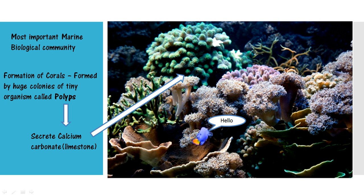Coral reefs are one of the most important marine biological communities in the whole world. These corals are formed by huge colonies of tiny organisms called polyps, which secrete calcium carbonate mainly to form a protective crust around their soft bodies. When they die, their outer skeletons remain as a platform for others to continue building these corals.